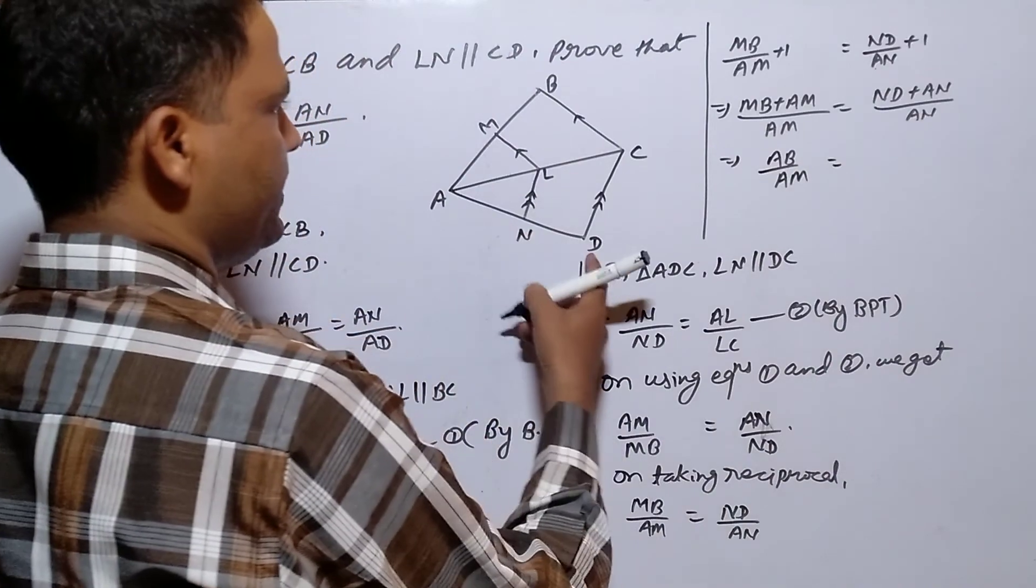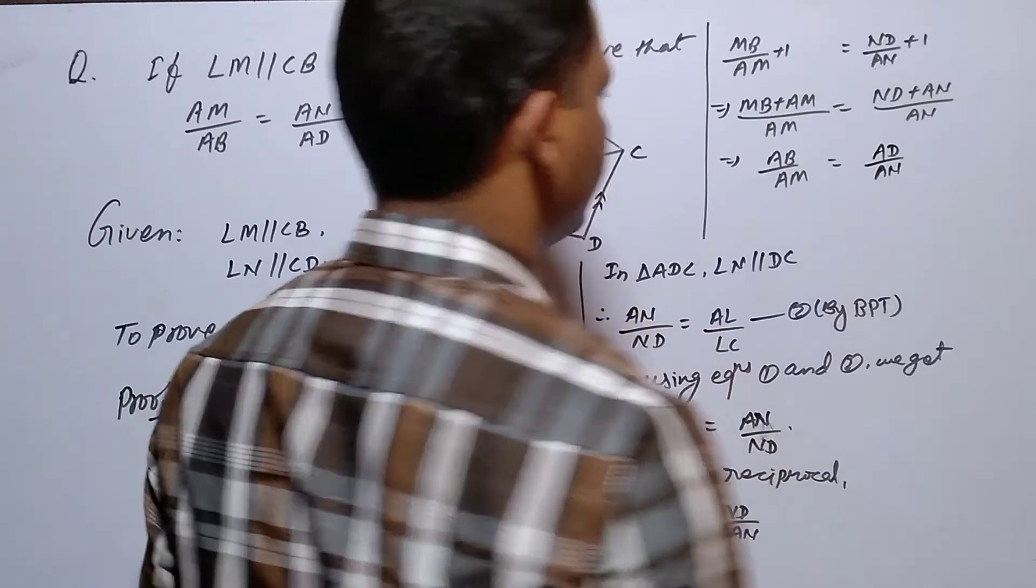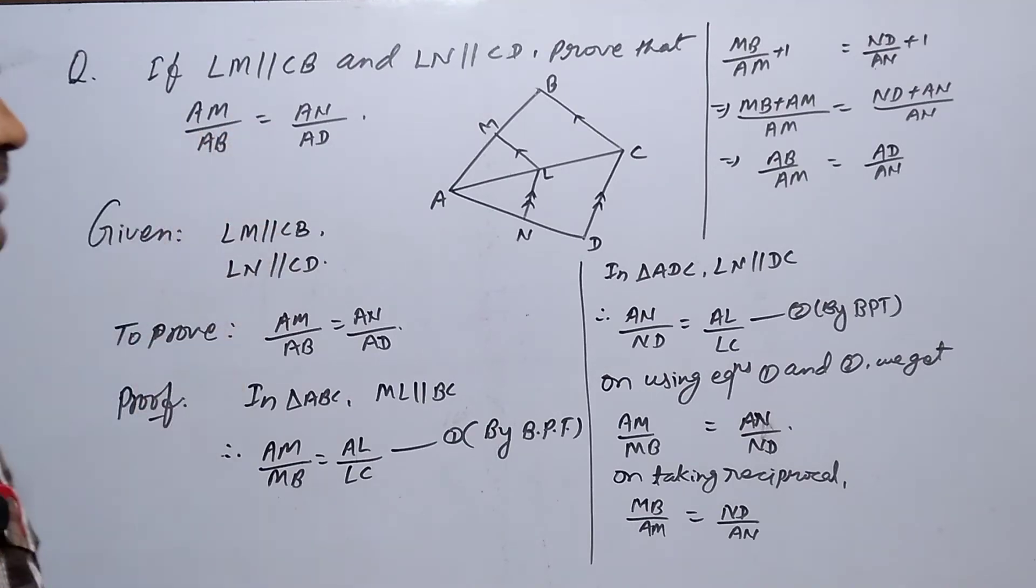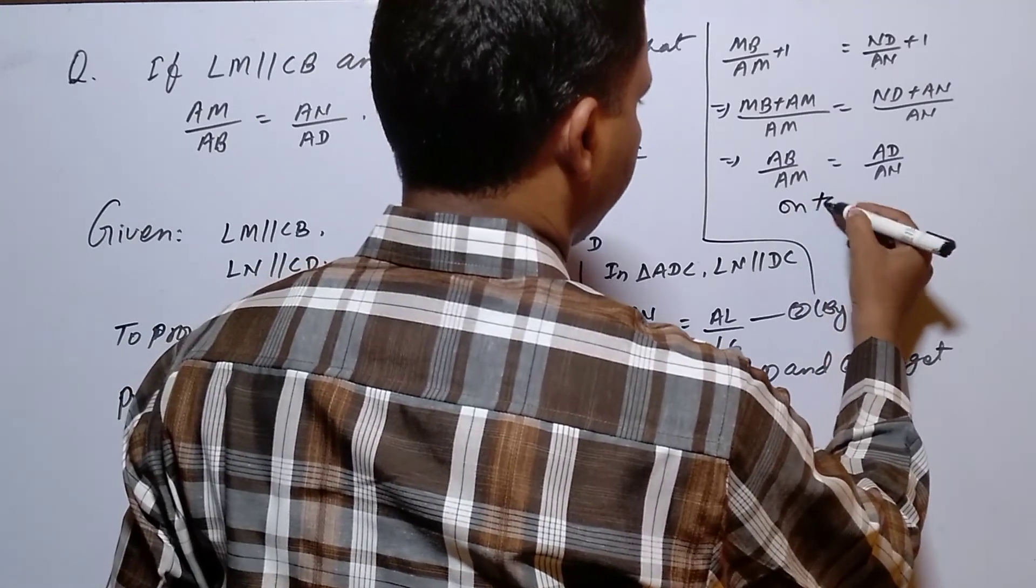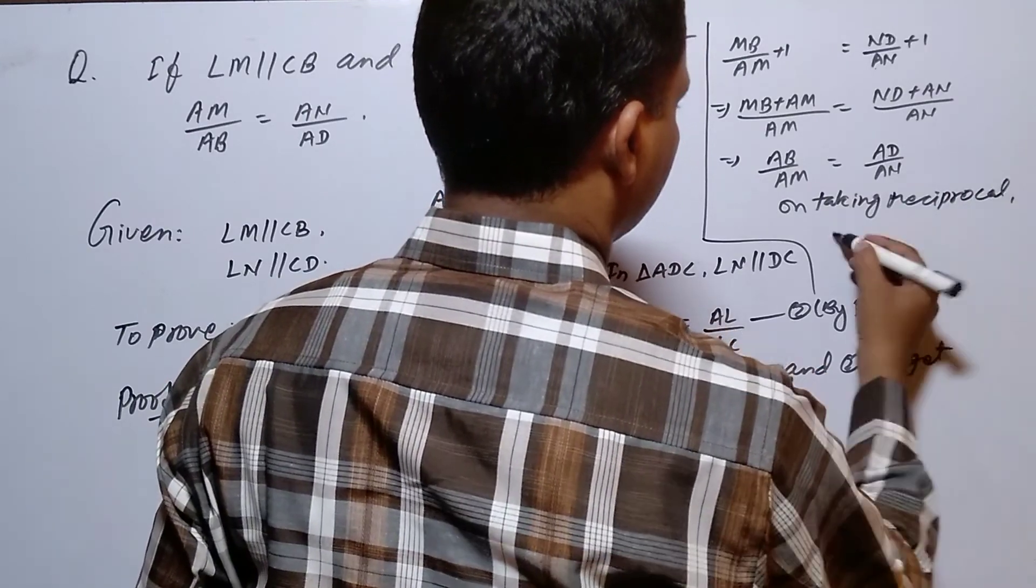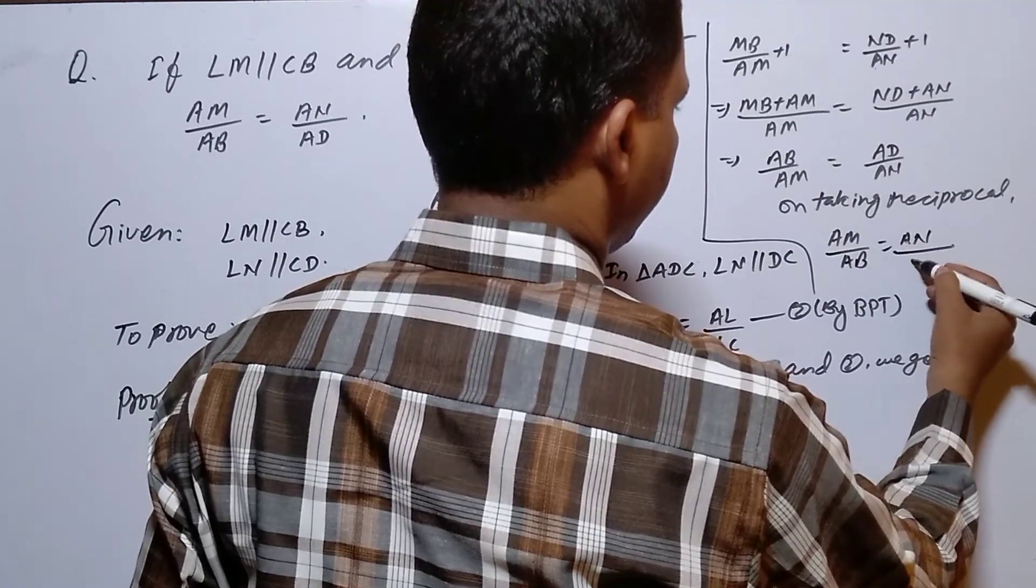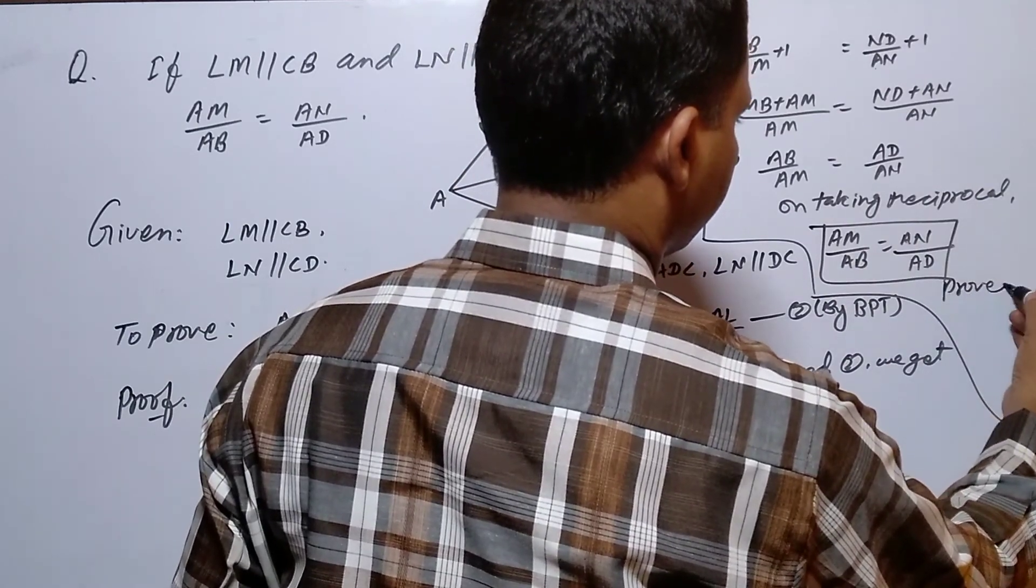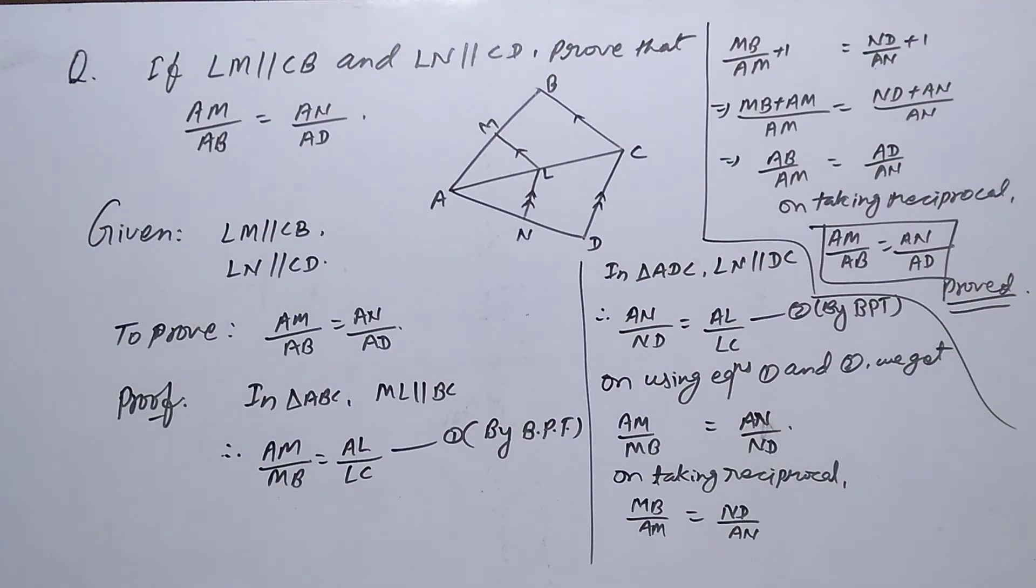And here ND plus AN equals AD by AN. But we still haven't proved it because we need to take the reciprocal. On taking reciprocal, AM by AB is equal to AN by AD, and this is what we had to prove.